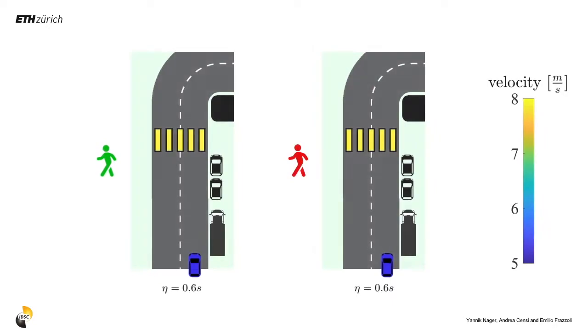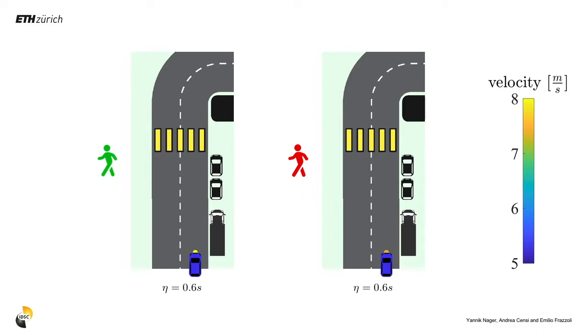By taking into account different agent classes, different trajectories are obtained, each guaranteeing safety with respect to that class.